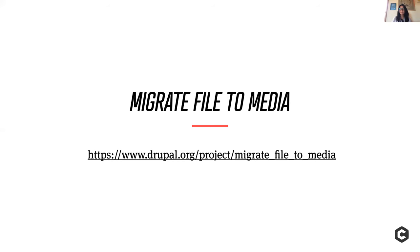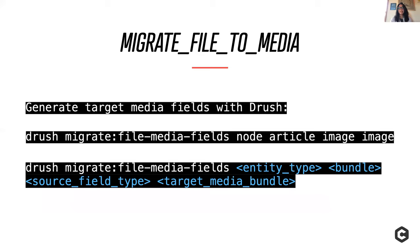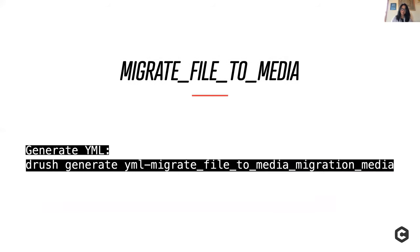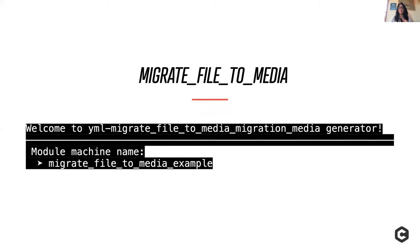The other contrib project that many people have had success with is 'migrate_file_to_media.' It also leverages Drush commands. You can run the Drush command 'drush migrate:file-media-fields,' pass in the entity type, bundle, source field, and target media bundle, and it will generate your target media fields just by running this command. It also enables you to generate your migration YAML files by running a command that launches a generator — which will walk you through questions about your custom module name, source field, and target bundle, then save the YAML files to the config/install directory.